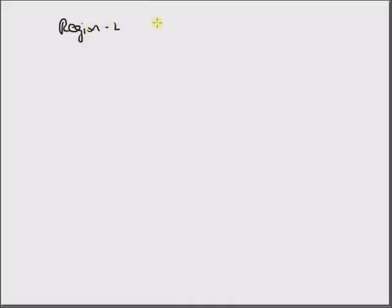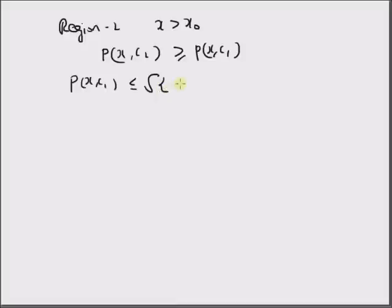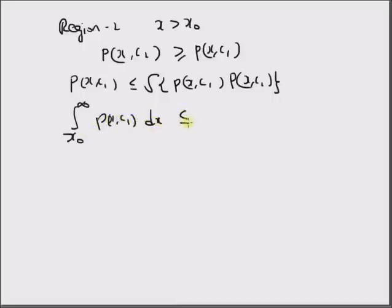For region 2, we have x > x₀, and the decision is p(x, c2) ≥ p(x, c1). By using Lemma 1, we can say that p(x, c1) is always less than √(p(x, c1) · p(x, c2)). Integrating both sides over region 2, that is from x₀ to ∞: integral from x₀ to ∞ of p(x, c1) dx ≤ integral from x₀ to ∞ of √(p(x, c1) · p(x, c2)) dx.